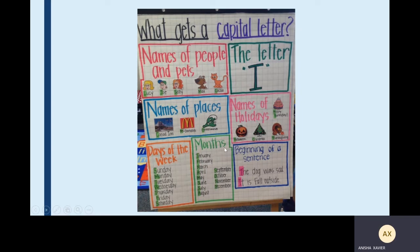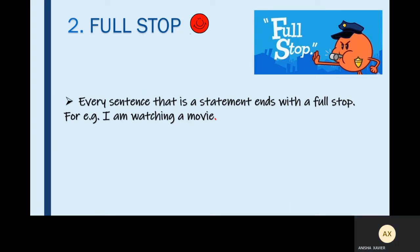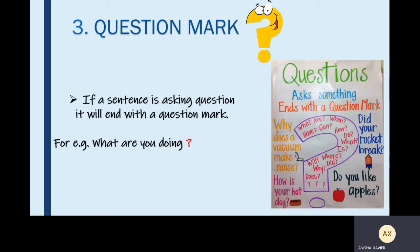I hope these points are clear to you. Now we move on to the next one — full stop. Every sentence that is a statement ends with a full stop. For example, 'I am watching a movie.' This is a statement, so it ends with a full stop. The third punctuation mark is the question mark. If a sentence is asking a question, it will end with a question mark. For example, 'What are you doing?' The sentence is asking a question, so it ends with a question mark.